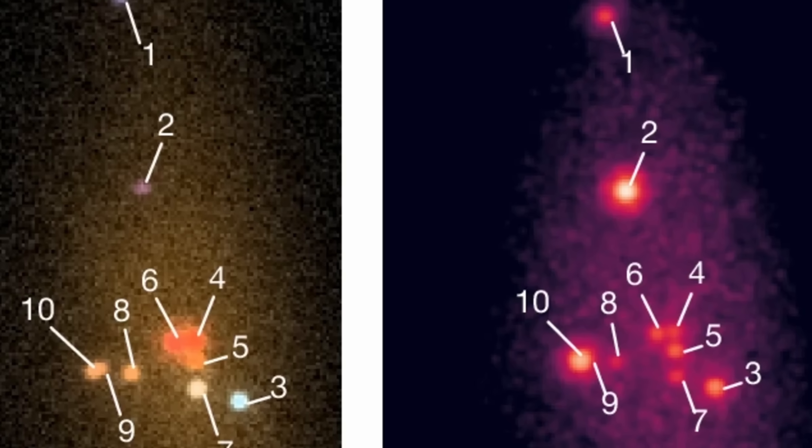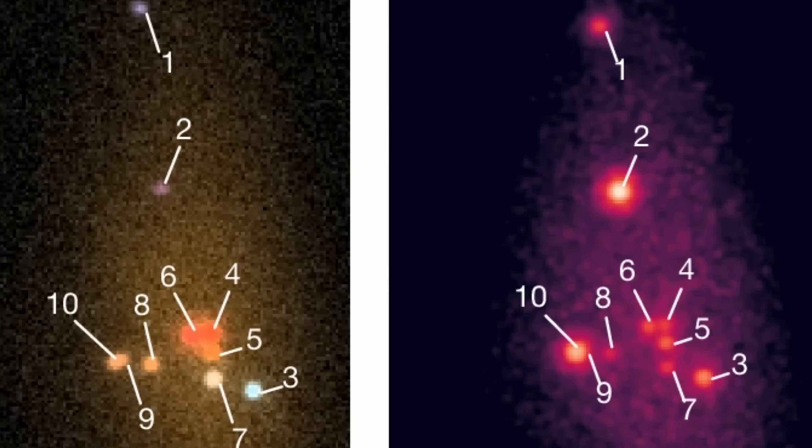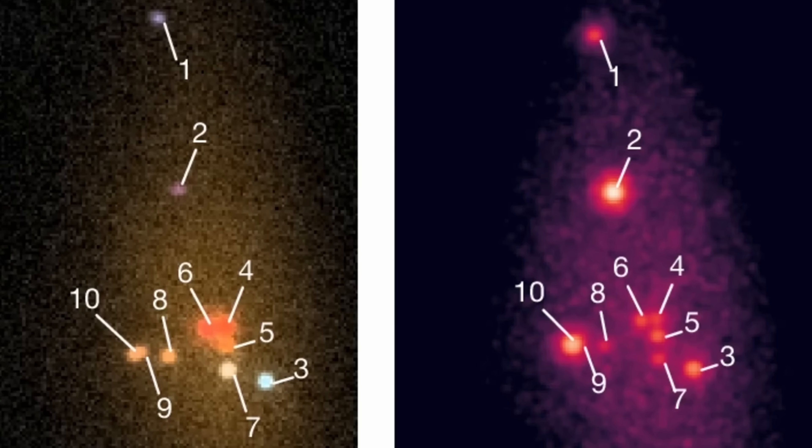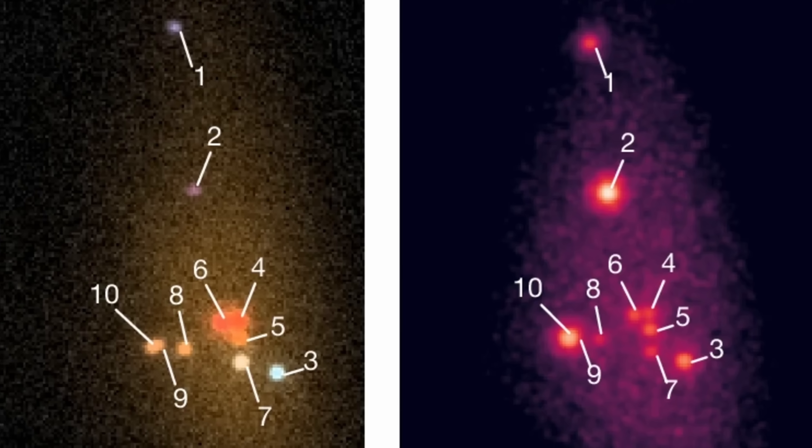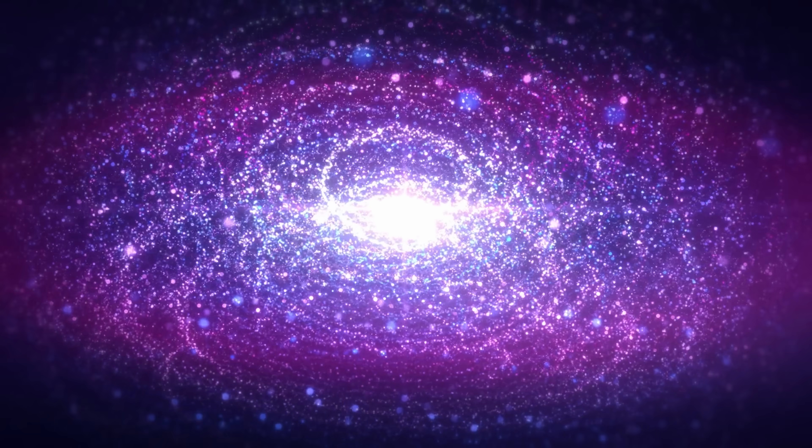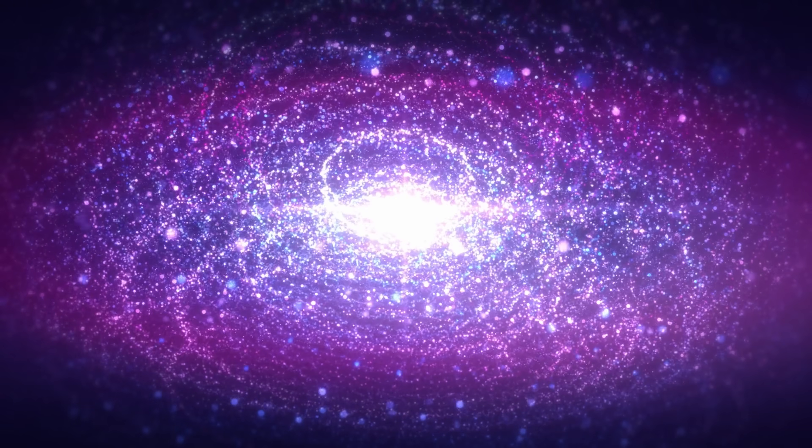And interestingly, here we even have the total mass. Each of these clusters, for example, seems to be at least 100,000 to 1 million solar masses, with the entire galaxy being no more than 20 million solar masses in total.